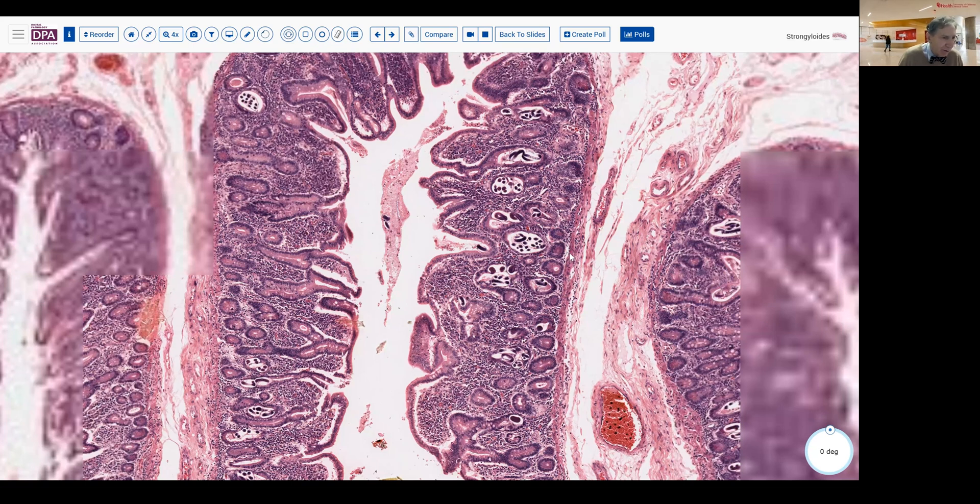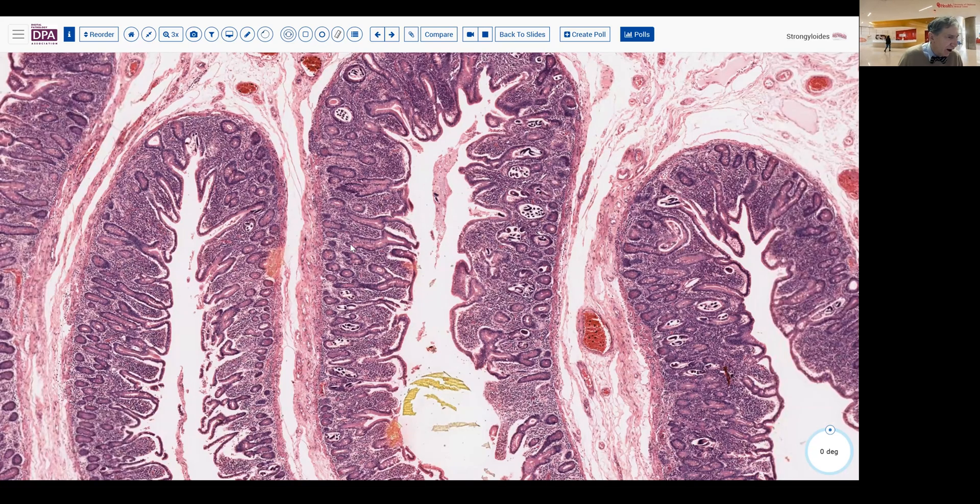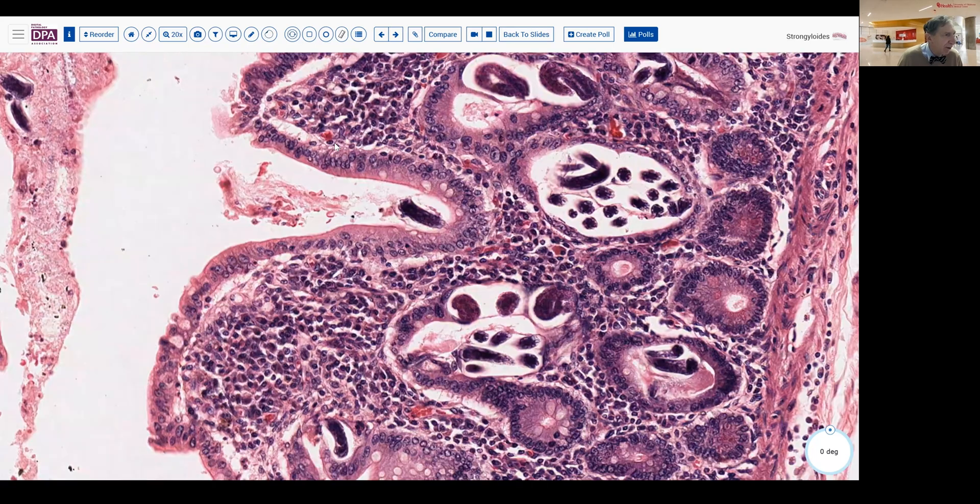Note, however, that the lamina propria, just mildly inflamed, the submucosa is not affected at all. If we look again around here, we see a little bit of eosinophilia, but nothing very striking in terms of response.